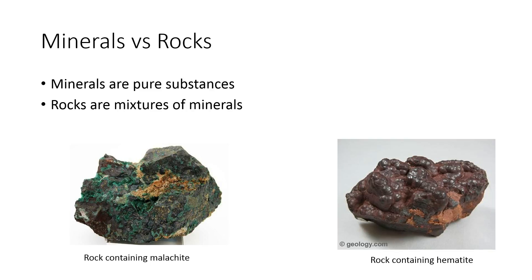What you can see on the screen now is a rock that contains the mineral malachite. The rock is the parts of that sample that are grey or reddish in colour, and the malachite is the green part. So all of it together is a rock, but the mineral is specifically that green malachite portion. On the right, you can see a rock that contains a lot of hematite. On the surface of that rock you'll see bubbles, and those bubbles are the crystals of hematite that formed when the rock froze and solidified.